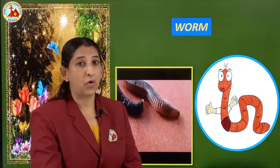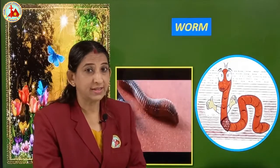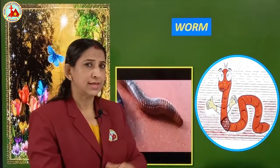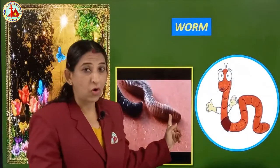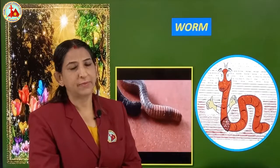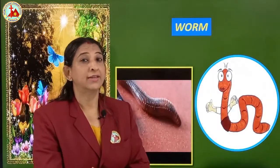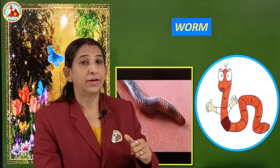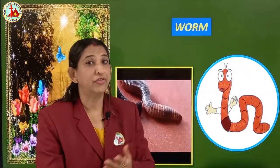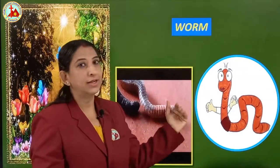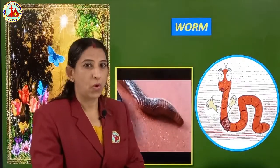Next are worms. This insect we also see in rainy season — most probably in the toilets. But they are the friends of the farmer. Why? Because they make the land fertile. They help to make the land fertile, so they are called the friends of the farmers. Which insect is this? Worm.